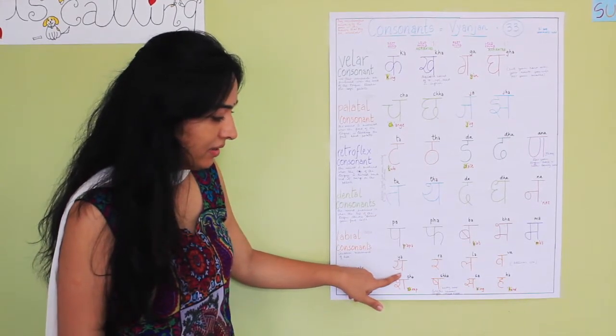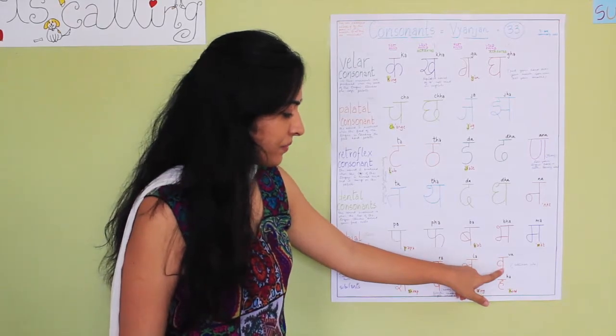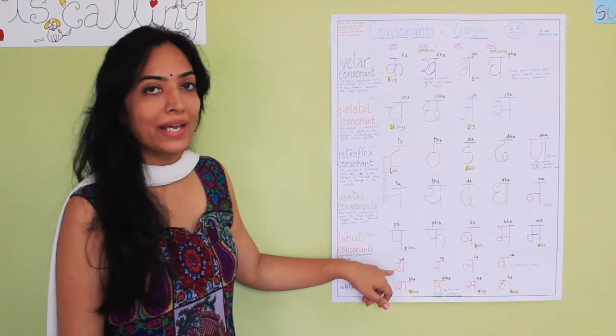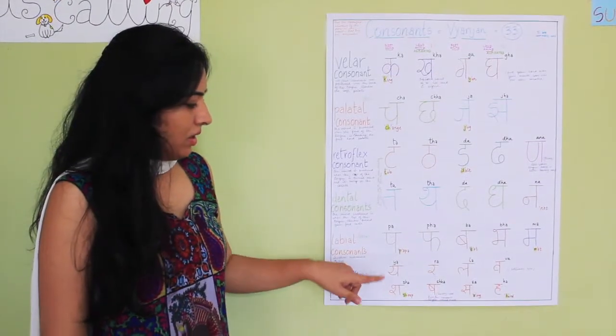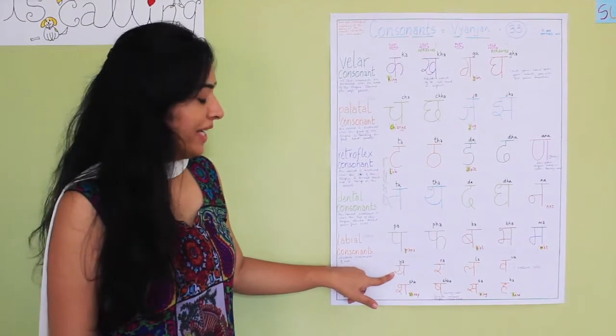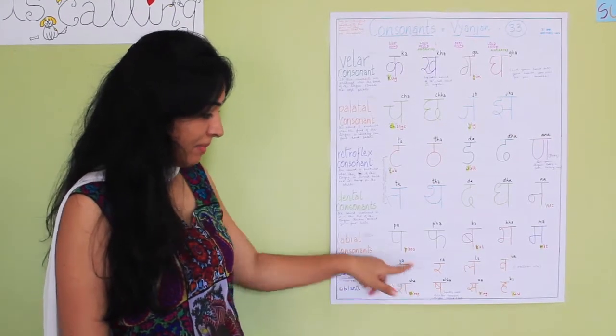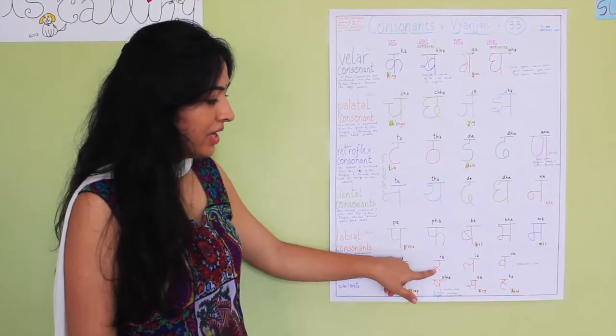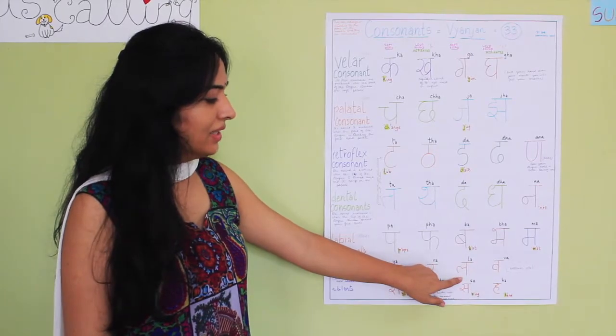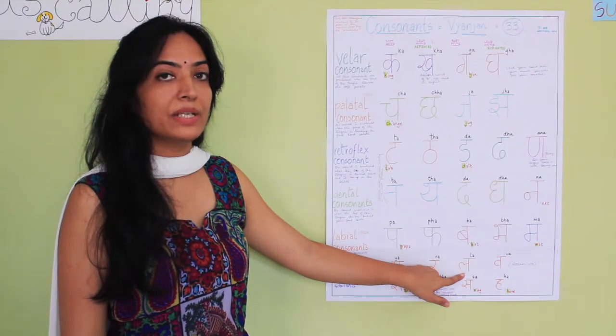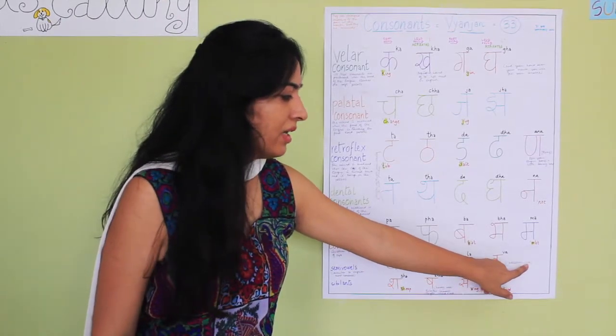And this is Y, R, L, V. Now Y is absolutely, you say Y for Y. The Y of English is the Y of the semi-vowel. Y. The R is the English alphabet R. The L is the English alphabet L. Now V is between V and W.